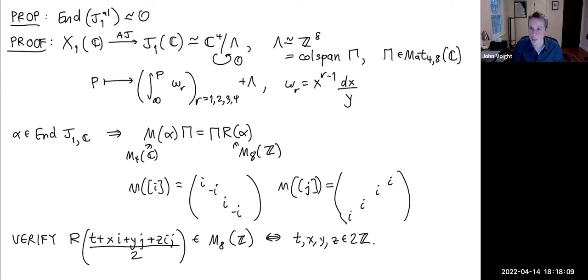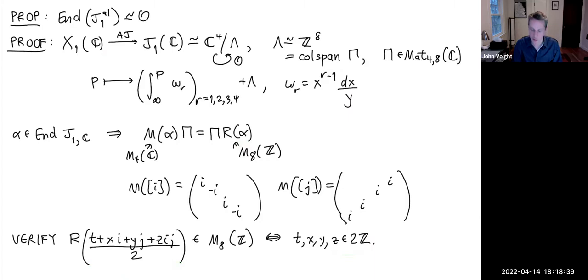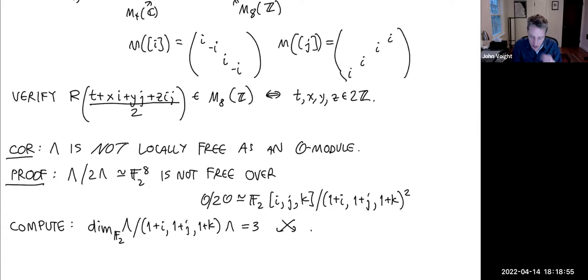Once we have these representations, we compute the integer matrix R and ask: is (1 + i + j + ij)/2 eligible to be an endomorphism? That would require integer entries in the homology representation. Computing to sufficient complex precision, you see that this only happens when all entries are even — so it's not an endomorphism. Thus the full endomorphism ring is exactly O, the Lipschitz order.